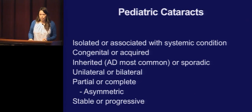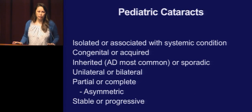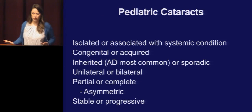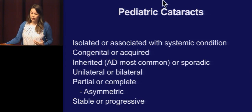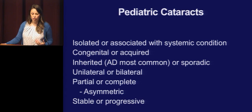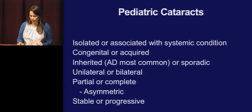Pediatric cataracts can happen in any way, shape, or form. They can happen associated with a systemic condition or isolated. They can be congenital or acquired, inherited or sporadic. Autosomal dominant is the most common inheritance pattern. It can be in one eye or both, asymmetric, partial, complete, stable, or progressive.